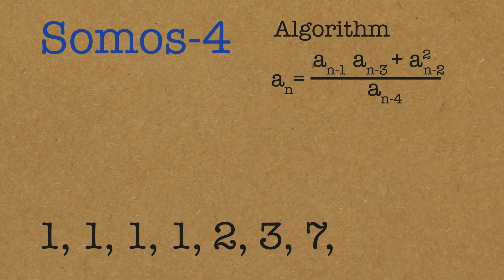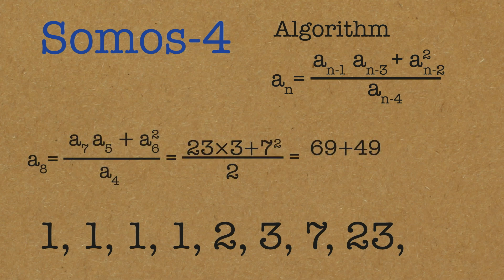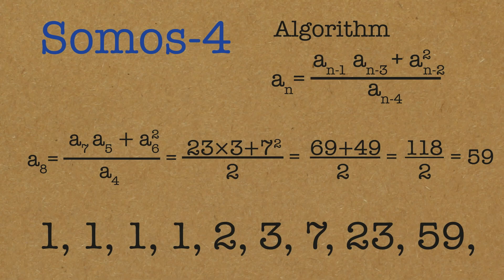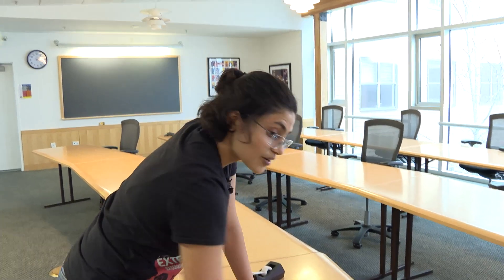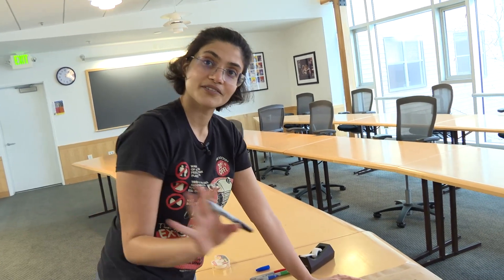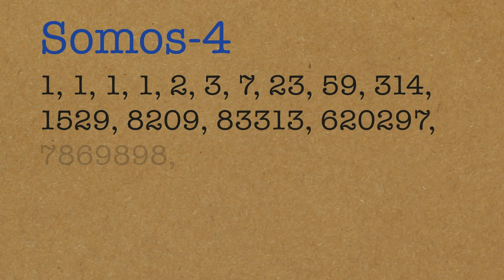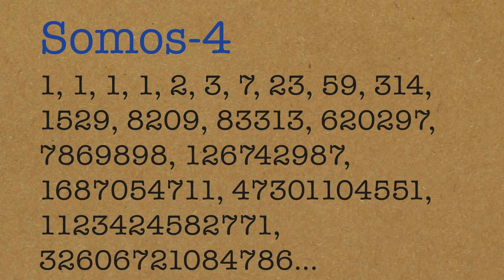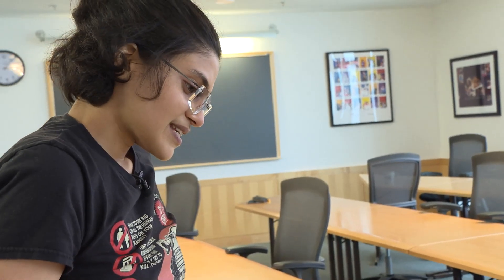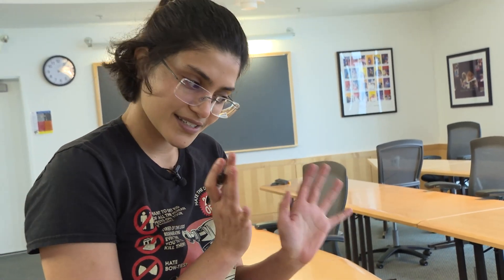We got four strings of 1, then 2, 3, and 7. Let's go on — maybe I'll show you the first term which has a denominator that is not 1, so you know I'm not cheating. The next one will be 23. Then a_8 will be (69 + 49) / 2, so 118 / 2 = 59. You see? Even when the denominator is 2, you've still got an integer — no fractions. This goes on for the whole sequence; you'll never get a fraction. The next ones are 314, 100529, and so on. The number is also growing — growing pretty fast.